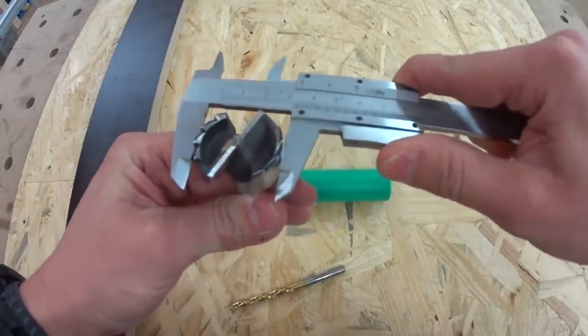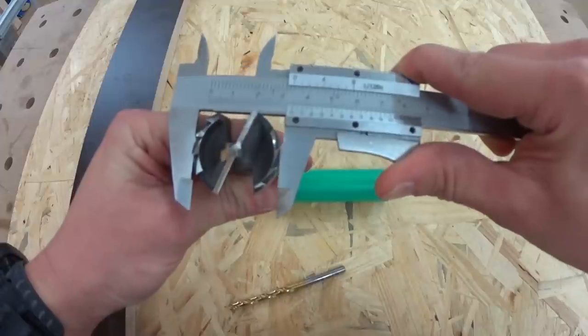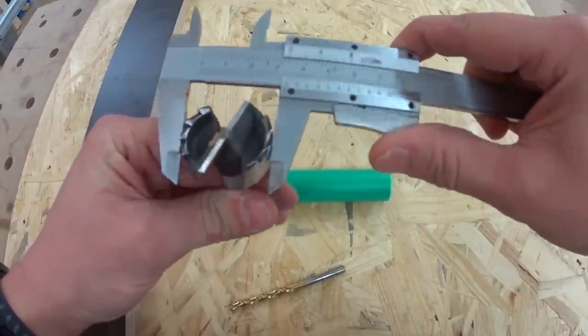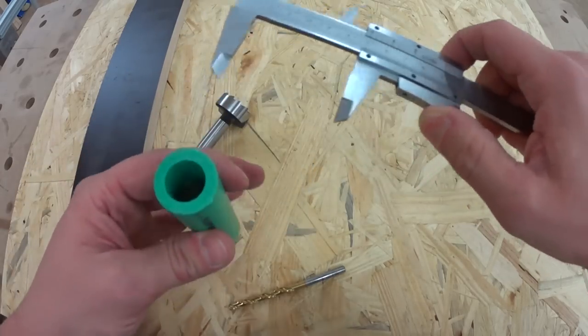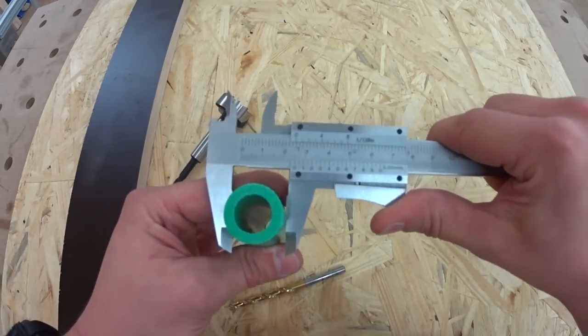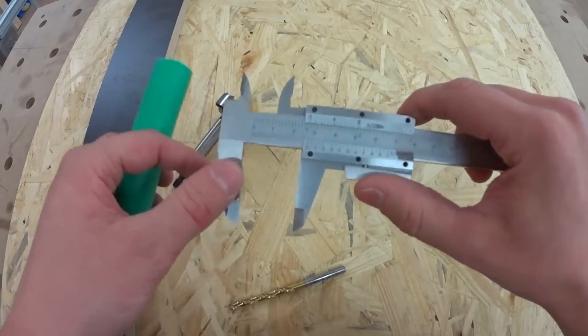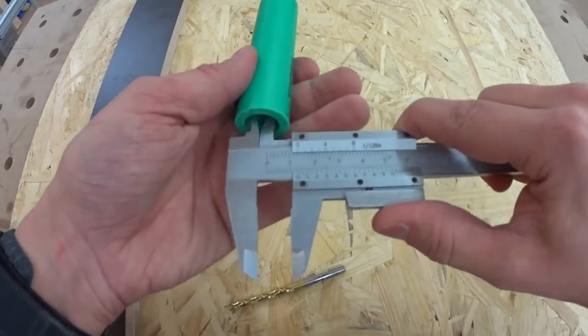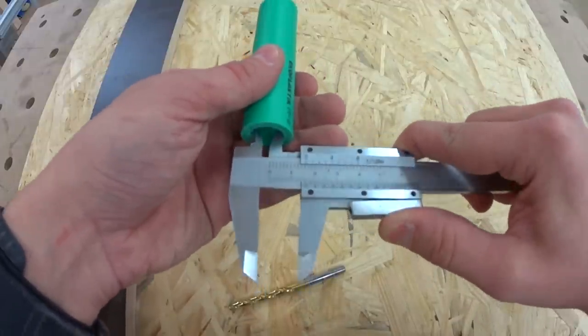This Forstner drill bit is a bit smaller than it should be, but could also be my caliper. Had better days, I presume. Of course, you can measure tubing with this. And here comes the next thing. Instead of the outer jaws here, you can use the inner jaws and you can measure the inner diameter of some kind of thing.